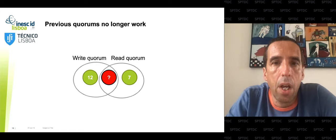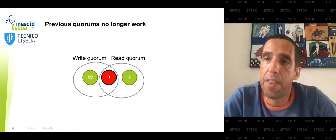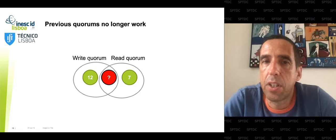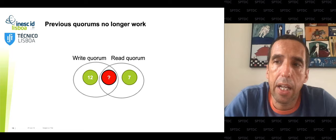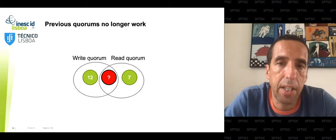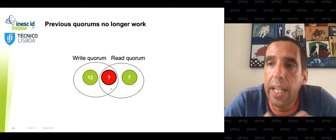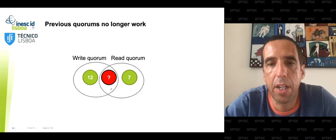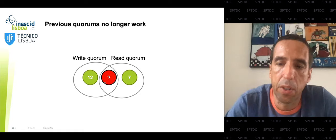Now let's implement protocols in the Byzantine world. The first observation is that the quorum systems from ABD no longer work. In crash fault tolerance, two majorities intersect in at least one replica, but that single replica may now be Byzantine faulty and will lie — it can return any fabricated value with a high timestamp, convincing the reader that some made-up value is the current state.